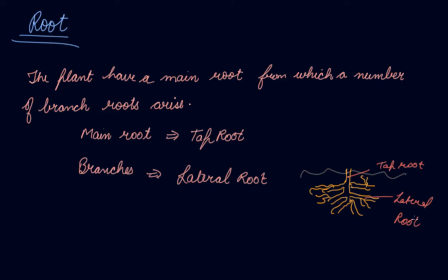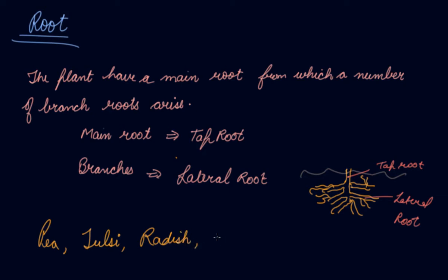For example, pea, tulsi, radish, and carrot — all of these are examples of plants that have tap roots.